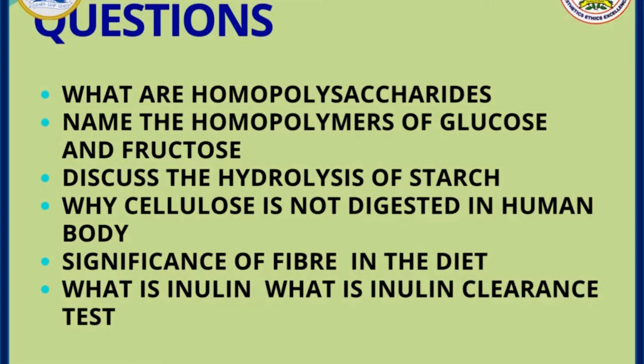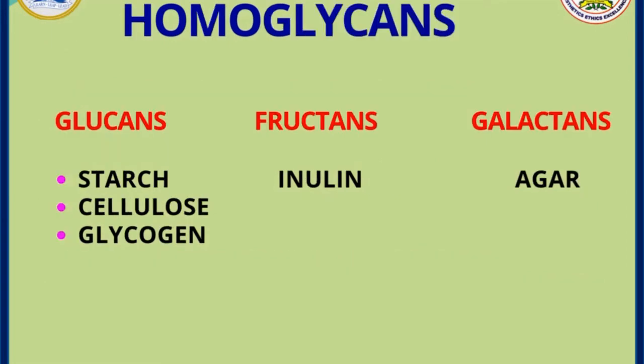These are the possible questions in theory and orals in the homopolysaccharides topic. Polysaccharides are otherwise known as glycans, so homopolysaccharides are otherwise known as homoglycans. If formed of glucose, we say glucans; if formed of fructose, fructans; and if formed of galactose, they are known as galactans.